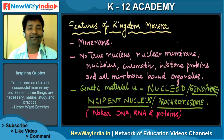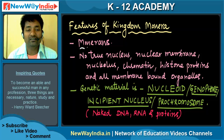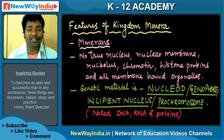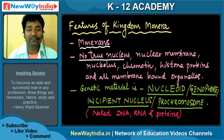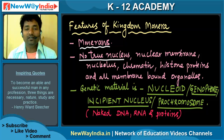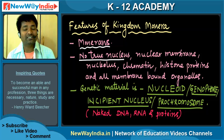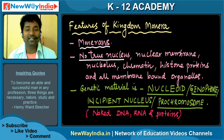The features of Kingdom Monera: the members are called Monerans. They have no true nucleus — meaning no nuclear membrane, no nucleolus, no chromatin, no histone proteins, and all membrane-bound organelles are not present in a true form. That is the key thing you need to understand.